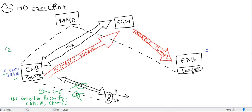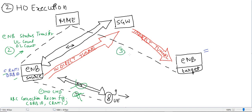The UE is continuously moving towards the target eNodeB. Meanwhile, source eNodeB sends a message called eNB Status Transfer. The content of this message includes uplink count and downlink count. This message is used to tell the target eNodeB at which packet number it should receive from UE and forward packets to UE. This message is sent from source eNodeB to MME.